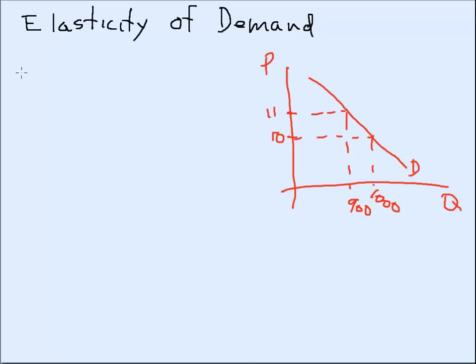Now we know the elasticity of demand is percentage change, supposed to be change, triangle, that looks a little better doesn't it, in quantity demanded all over the percentage change delta in price. Delta means change in price. How do we find the percentage change?